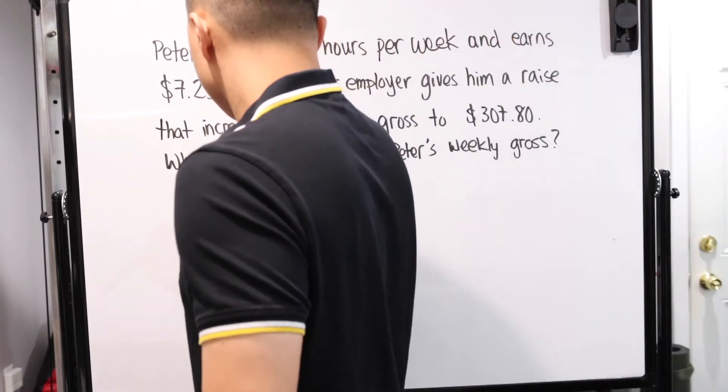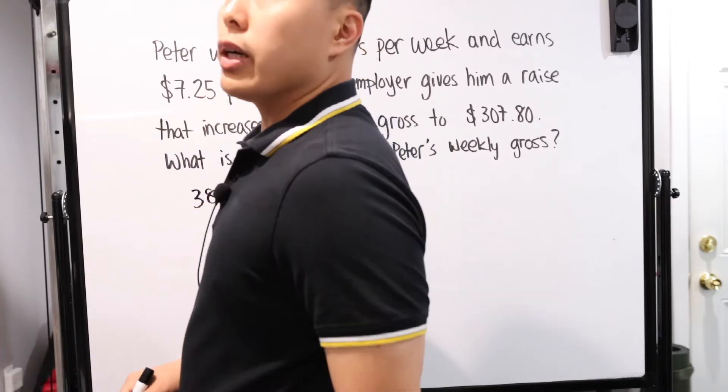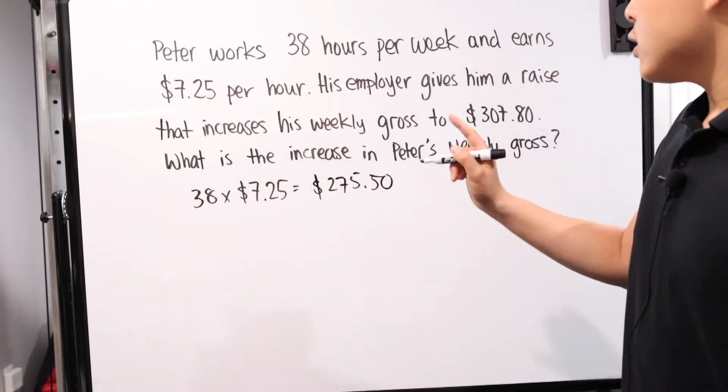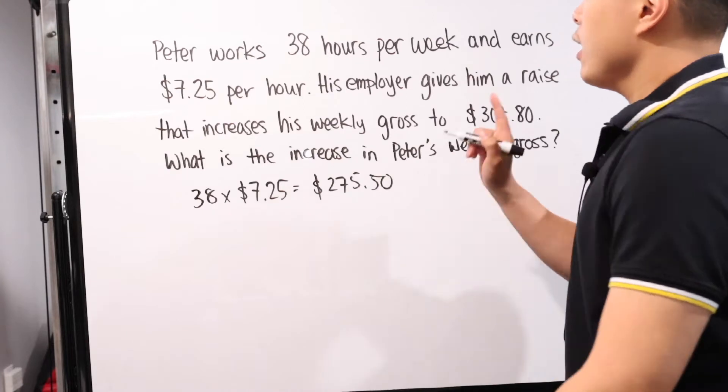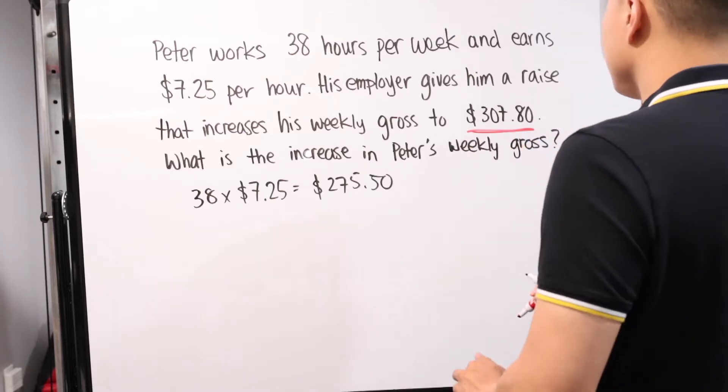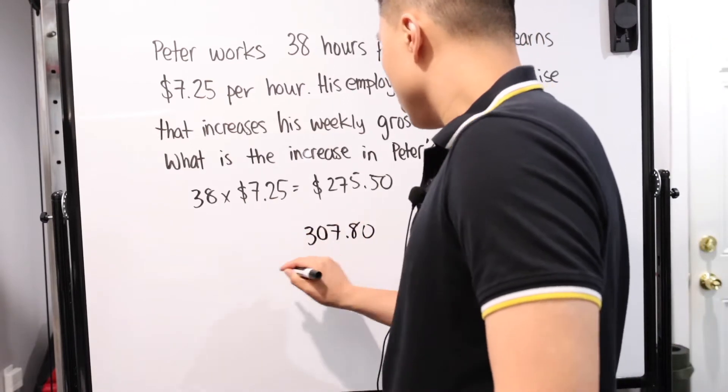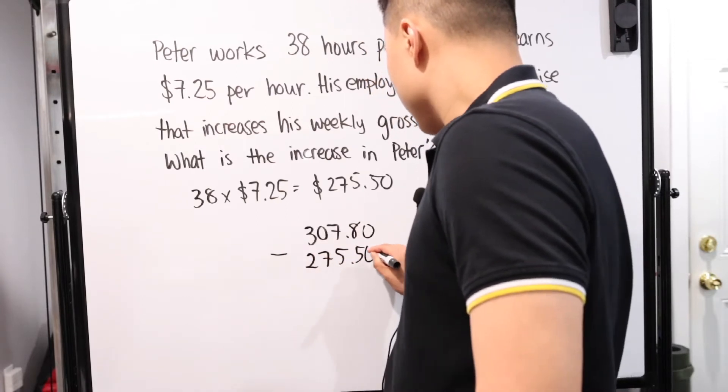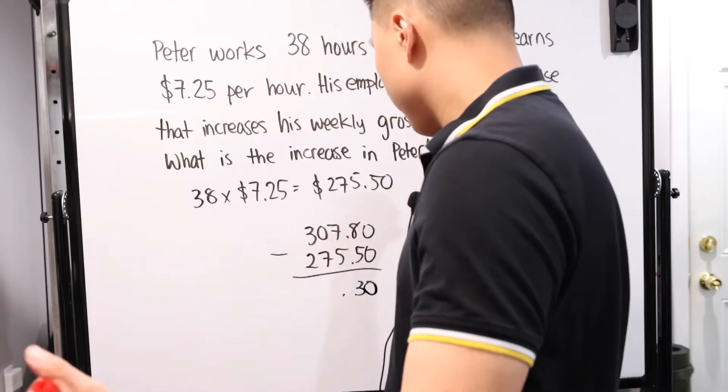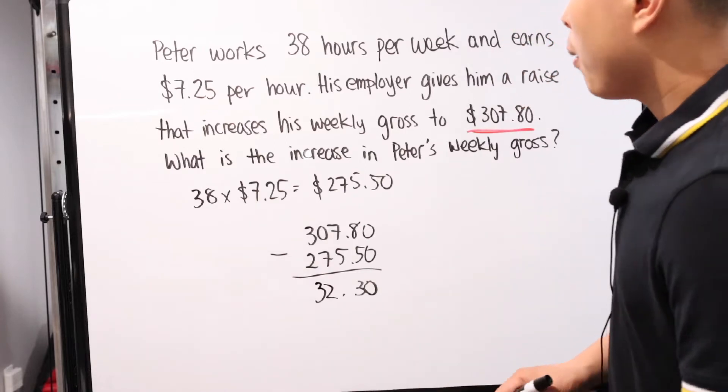Basically all we have to do is combine this and figure out how much he originally earned per week and then compare it to his new earnings per week. So all we have to do is 38 times $7.25, which is, I don't know, what is that, $275.50 I think? Check my math. So that's about $275.50 was his original weekly gross or weekly income. Now his new one is $307.80. So all you have to do is just get $307.80 and then you subtract $275.50. And that one is $32.30.